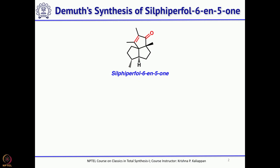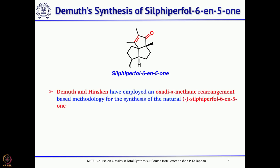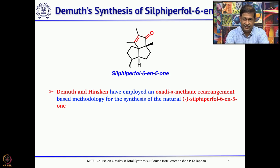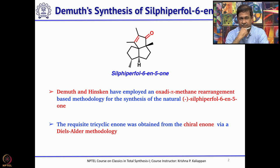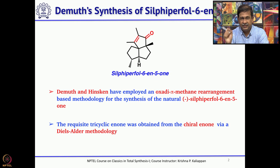Today we will talk about maybe 4 or 5 total syntheses, and the first one we will discuss is the total synthesis of Silphi-Perfol-6-En-5-one. This synthesis was reported by Demuth and Hinsken, and interestingly what they used is oxa-di-pi-methane rearrangement induced by photochemical conditions. The strategy of using oxa-di-pi-methane rearrangement to get the triquinane is a unique one, and the starting material — the diene required for the asymmetric Diels-Alder reaction — was started from a chiral enone.